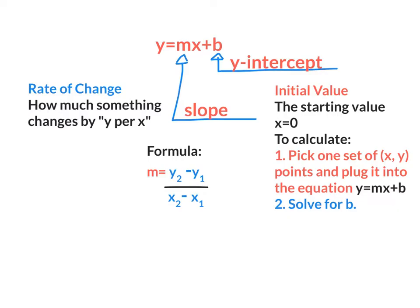In order to calculate the rate of change, we use the slope formula, y sub 2 minus y sub 1 all over x sub 2 minus x sub 1. When you calculate the initial value, you plug in your slope and one of the coordinates x, y into the y equals mx plus b equation.